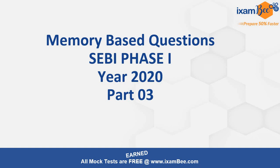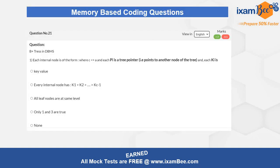You have to grab a pen and paper, mark your answer, and at the end evaluate your attempt. Give yourself a plus 1 for a correct attempt and minus 0.25 if it is not. At the end I'll tell you what are the good scores, what are the bad scores, and where you need to work on. Let's start with question number 21, the first question for this particular video.